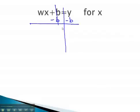Notice, b minus b subtracts out, and we're just left with wx equals. We don't have like terms, so we just leave it as y minus b.